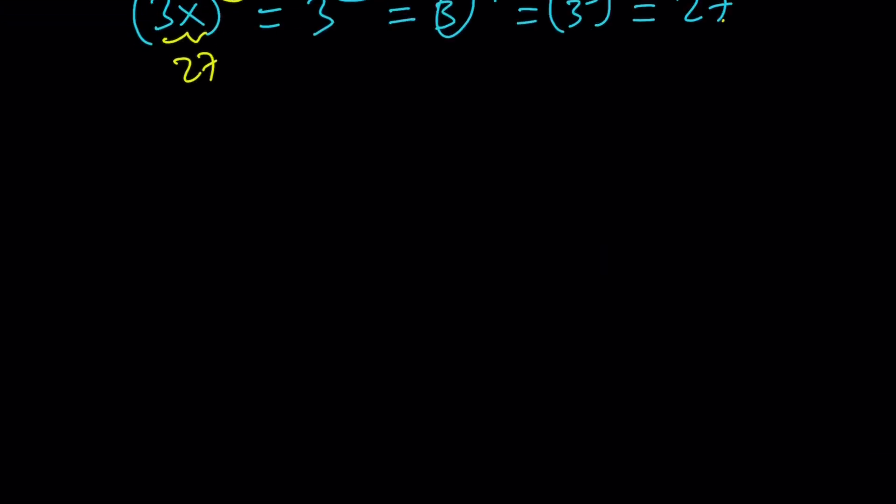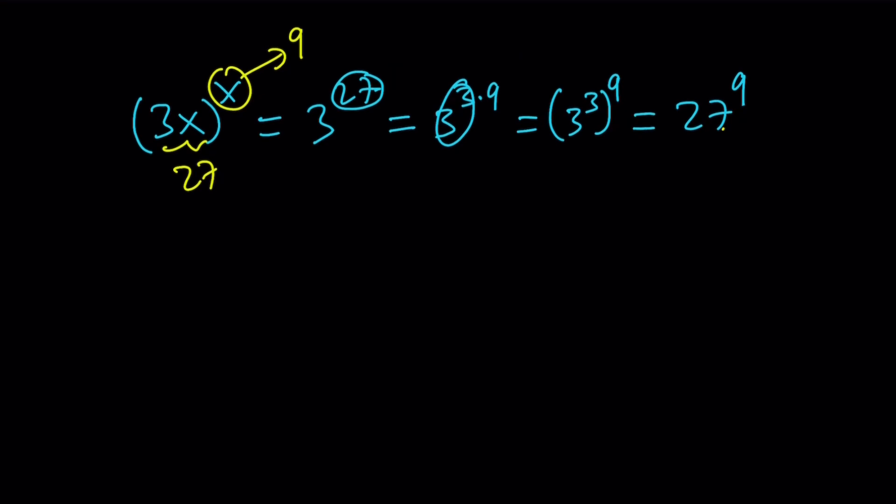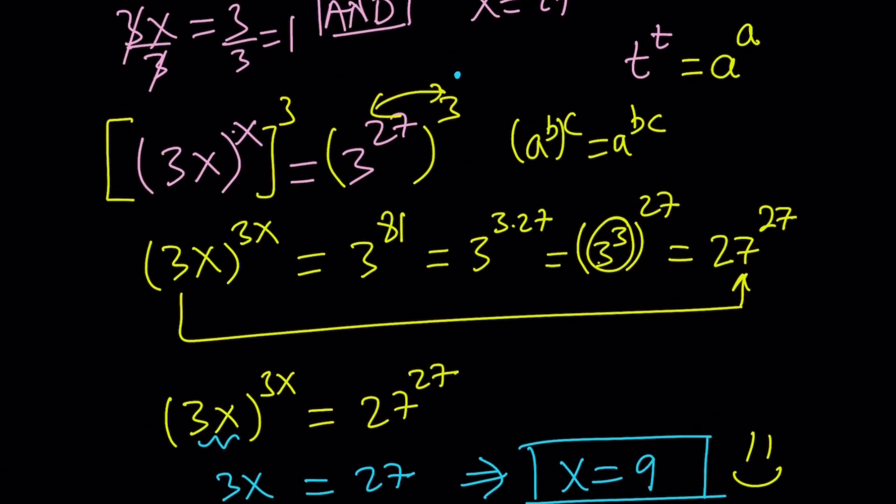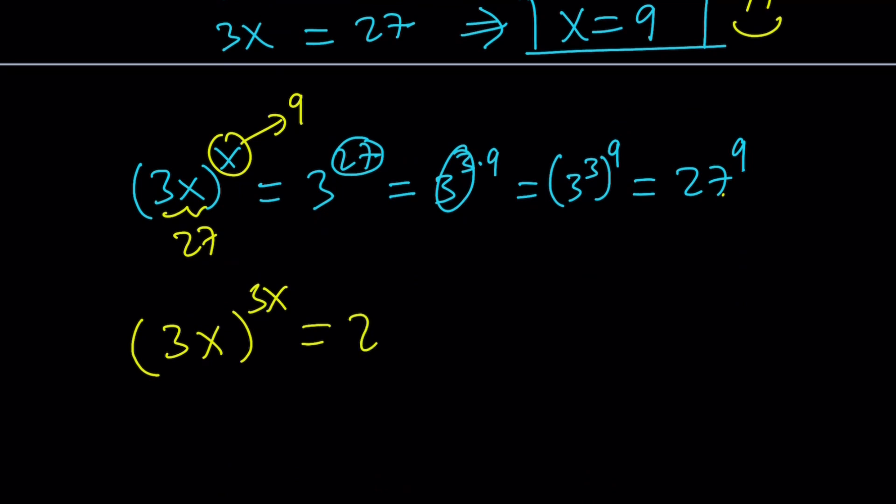Finally, I ended up getting (3x)^(3x) equals 3^81, which is 27^27. And we concluded that x equals 9. But is that the only solution?